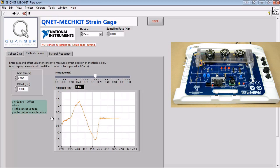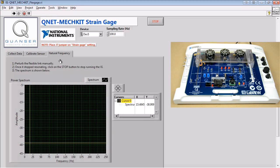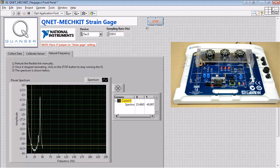Next, we'll switch to the natural frequency tab and then manually perturb the flexible link. After a few seconds, we'll stop the VI to populate our power spectrum graph. The peak in this graph is a measure of the natural frequency of the flexible link.